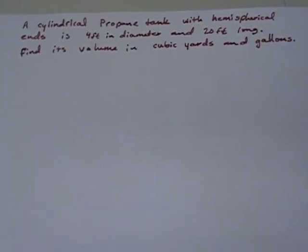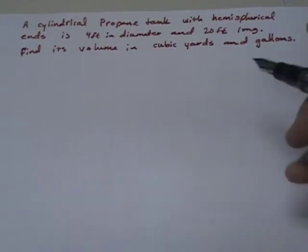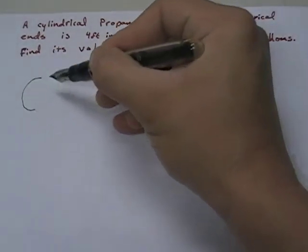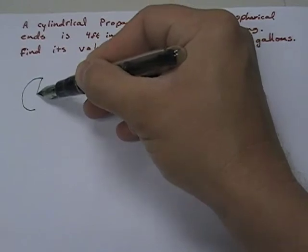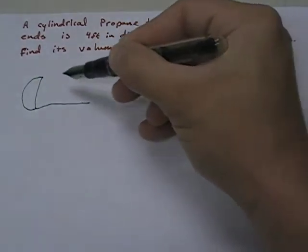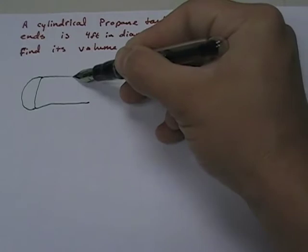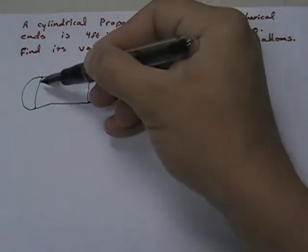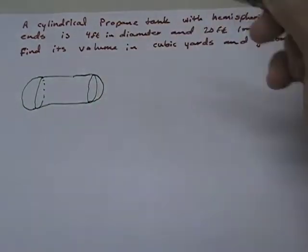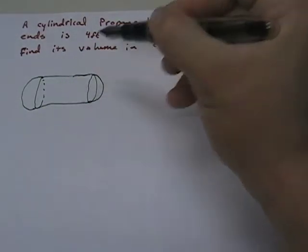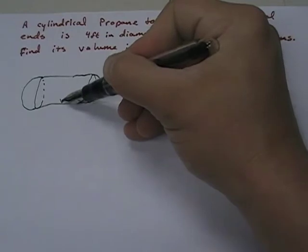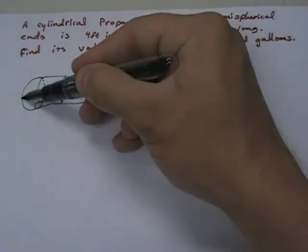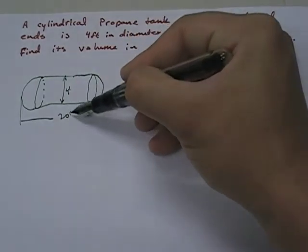So the first thing I want to do is draw this. I'm a visual learner and I want to see a picture. So I come over here and say alright, fine. We said cylindrical tank with hemispherical ends. Now what that means is we've got basically a cylinder that's got a dome attached to the end, a half. And we've been told that the diameter is 4 feet, 4 feet, and that the length, the total length, is 20 feet.